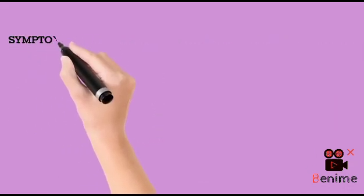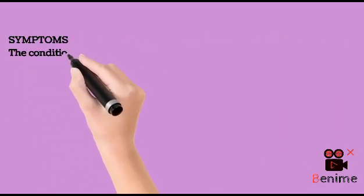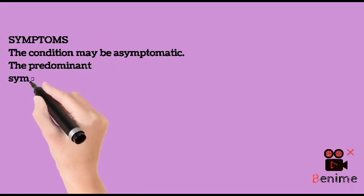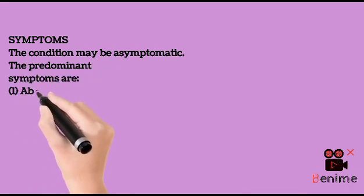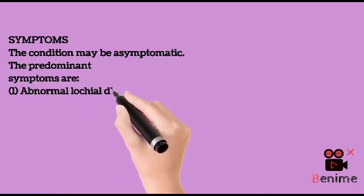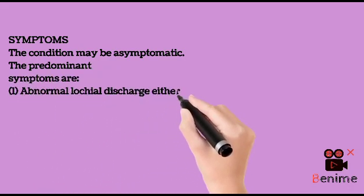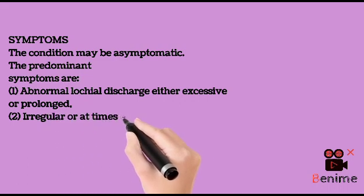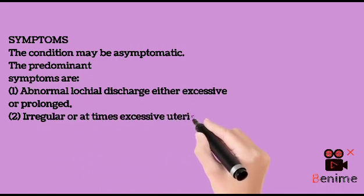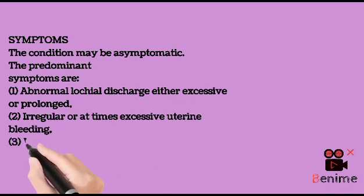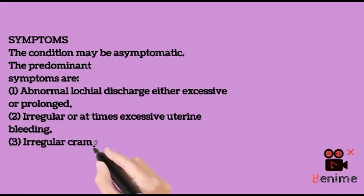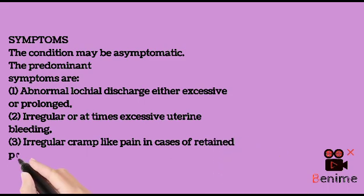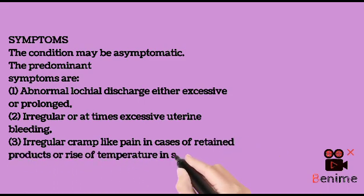Symptoms. The condition may be asymptomatic. The predominant symptoms are: 1. Abnormal lochial discharge, either excessive or prolonged, 2. Irregular or at times excessive uterine bleeding, 3. Irregular cramp-like pain in cases of retained products, or rise of temperature in sepsis.